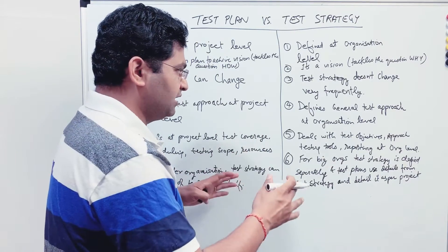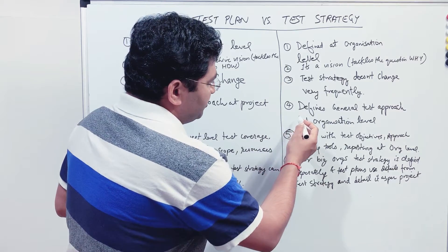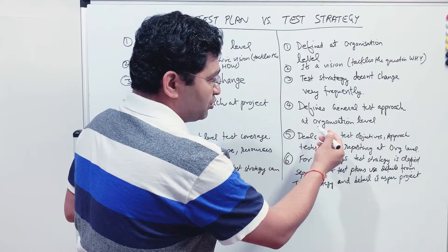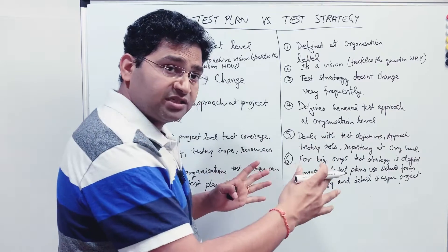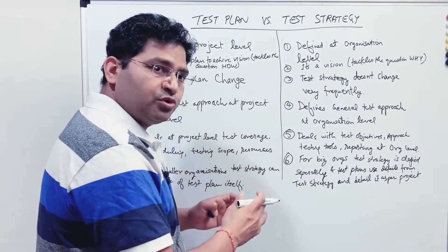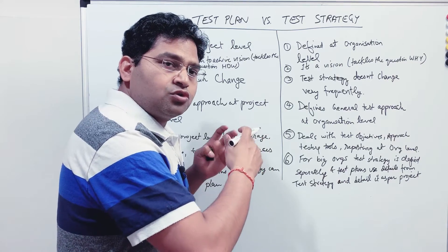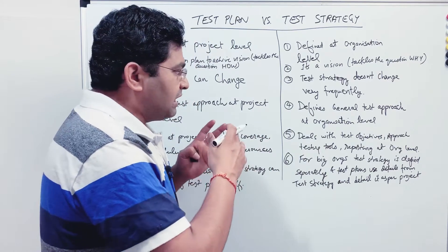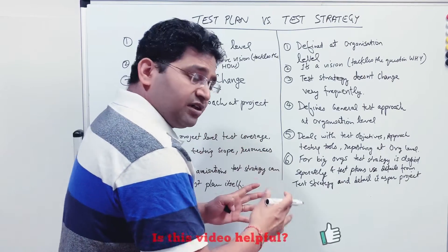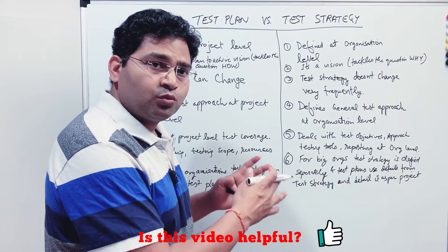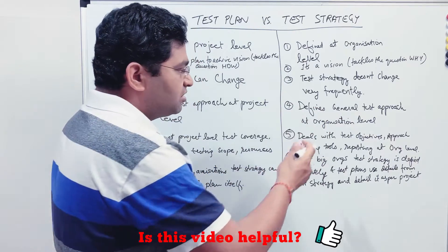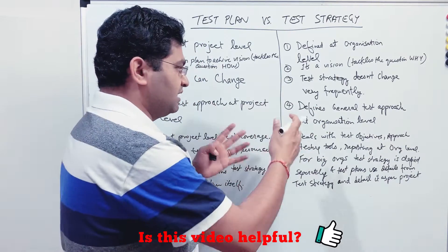The fourth point: the test strategy defines the general test approach at the organization level, which we've already understood from the diagram. What tools need to be used, how the defect management process will work, and what artifacts need to be produced during or after testing — all that general information goes into the test strategy.